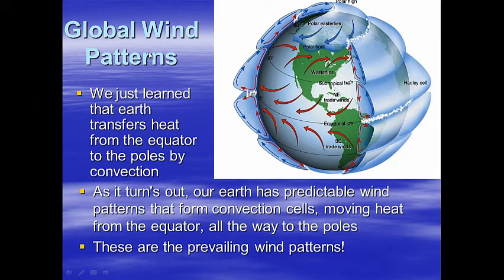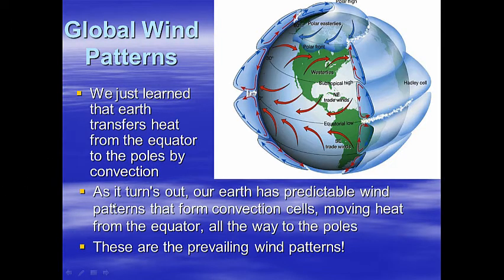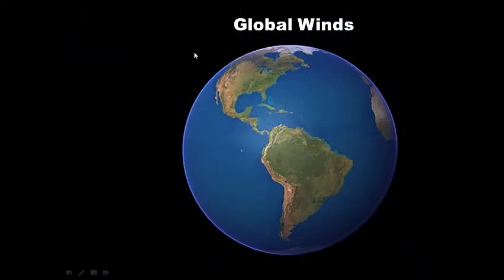Global wind patterns. For centuries, we have sailed and navigated our planet, making discoveries like Columbus discovering the Americas, and traded with other countries in the early 1600s and 1700s using global wind patterns. The Earth transfers heat from the equator to the poles by convection. As it turns out, our Earth has predictable wind patterns that form convection cells, moving heat from the equator all the way to the poles — these are the prevailing wind patterns. Wind is mostly convection, the transfer of heat by the flow of a heated material. Notice the patterns are curved because of the Coriolis effect.